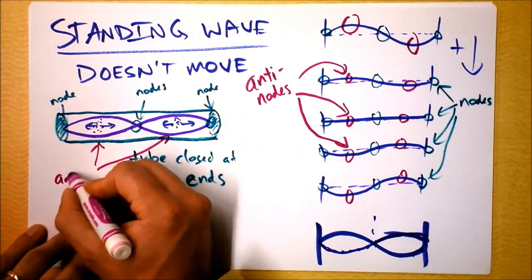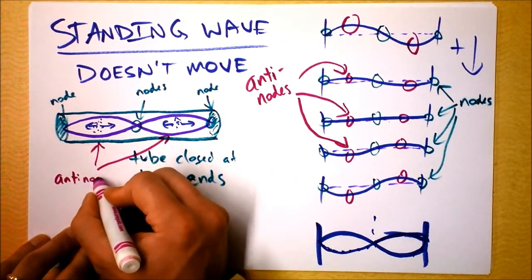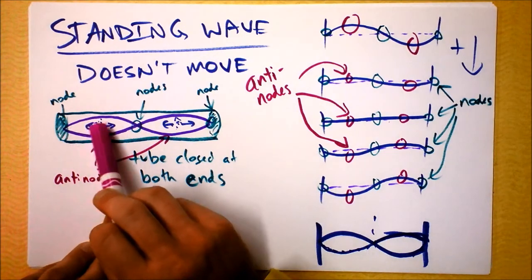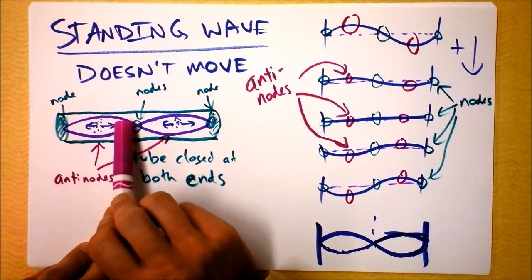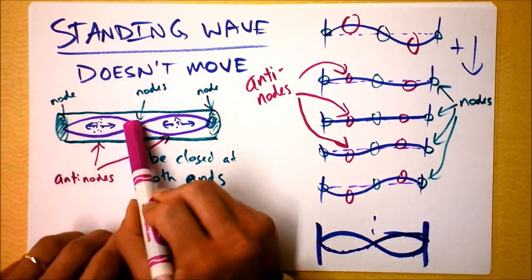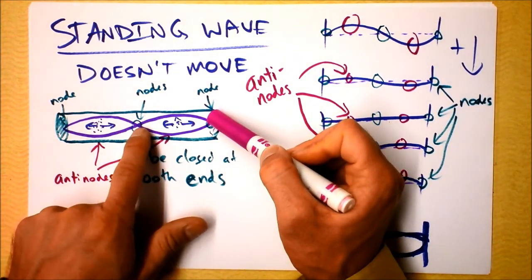This is the location, these locations are anti-nodes. And that means that the pressure is changing really dramatically here and the air is going to the left and then to the right and then to the left and then to the right. But at these nodes, there's actually perfectly still air.